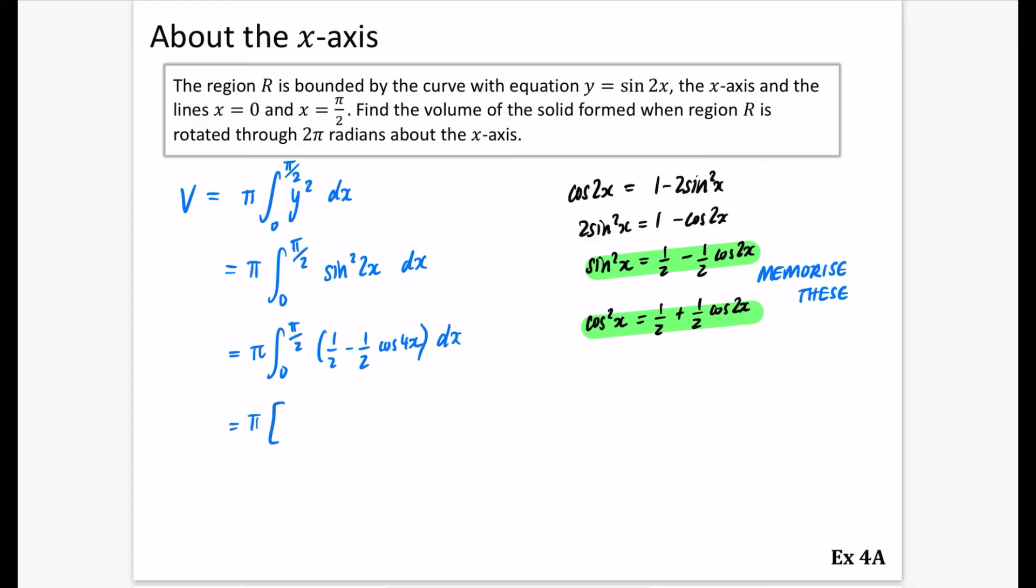So I can do that integration. 1 half is going to integrate to 1 half x. Now, I know that cos is going to go to sine, so it's going to be a sine 4x, and I'm going to have to counter that extra 4 by dividing by 4, so it becomes minus 1 eighth sine 4x between 0 and pi over 2.